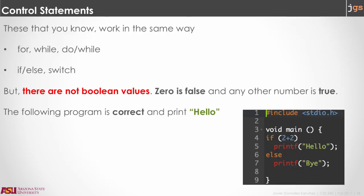Finally, regarding the control statements, conditional statements and loop statements, the ones that you know from Java, they work in the same way in C. So you can use for, while, do while, if, else, and switch as usual. The main difference that you need to be aware of is that there are not boolean values in C. The key idea in C is that zero represents false and any other number is considered a true value. Therefore, in this example, here, if 2 plus 2, because that number is not zero, that condition is considered true. Therefore, that program will print hello. And the same thing works for the condition in the loop.